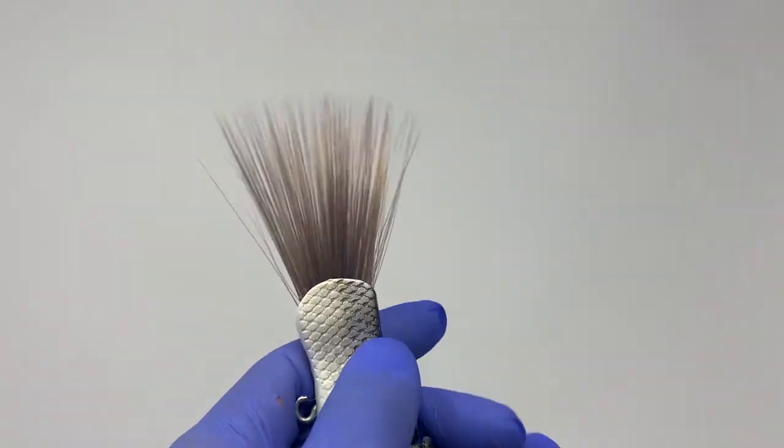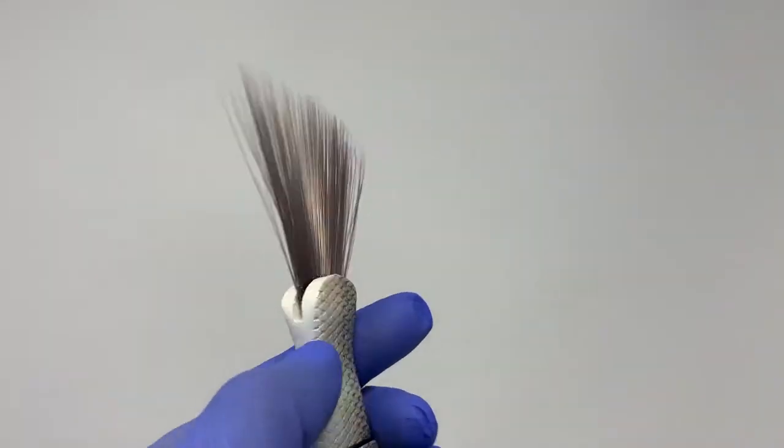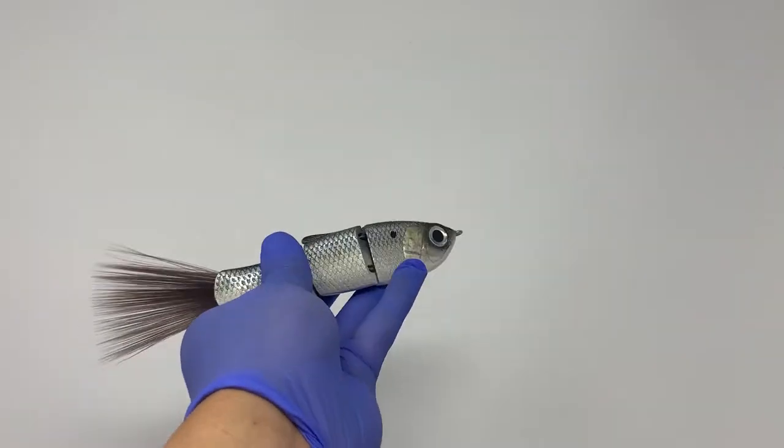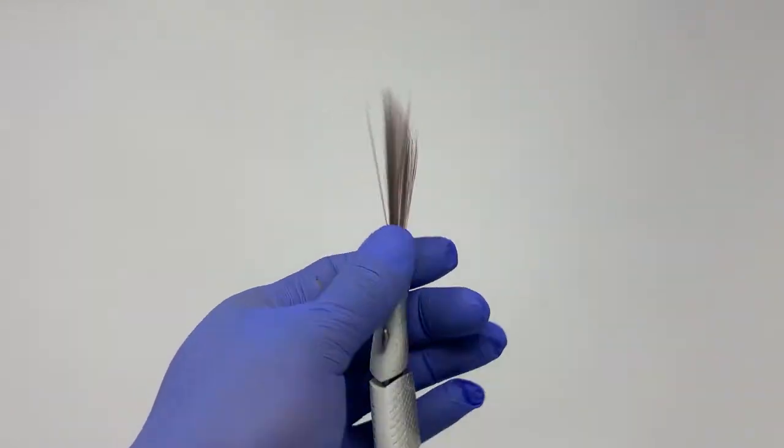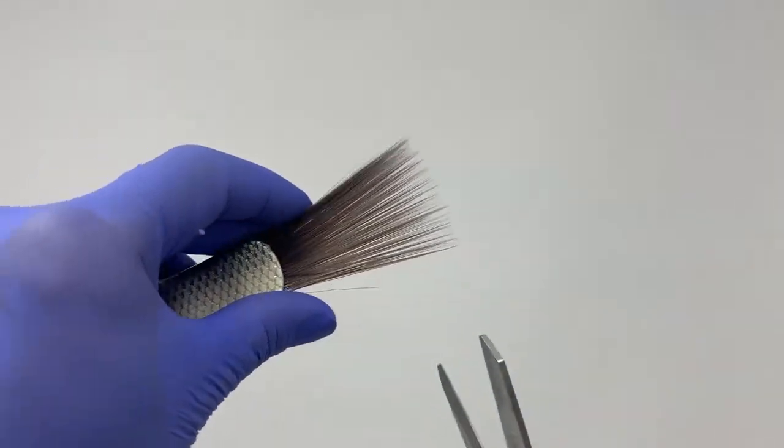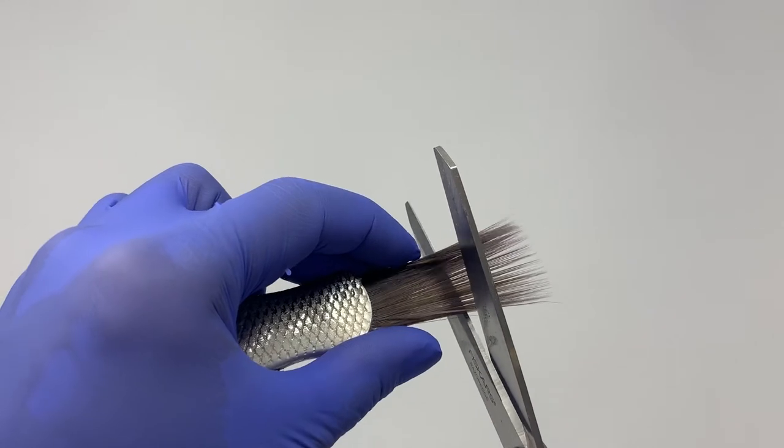All right guys, I have let the epoxy cure. I've taken off the masking painter's tape and this is what we have—we have a long tail. So what we're gonna do, just to get this looking good, I've got a sharp pair of scissors. I'm gonna cut straight. Don't cut too close.